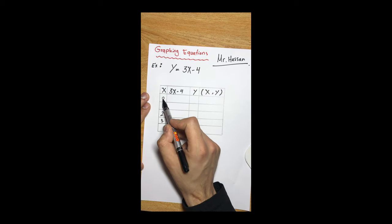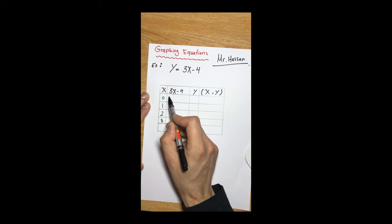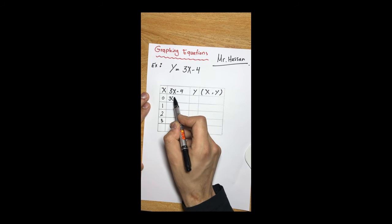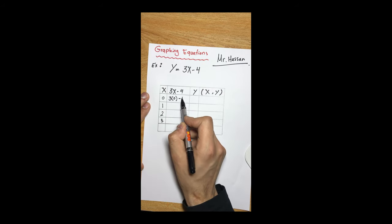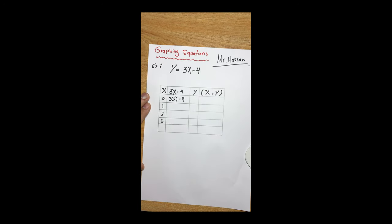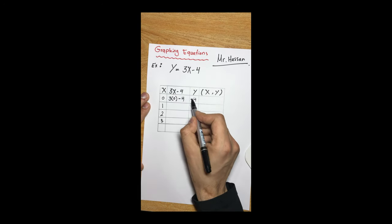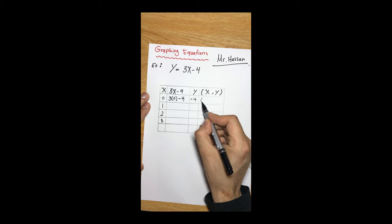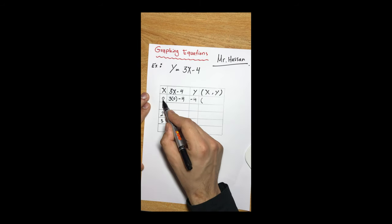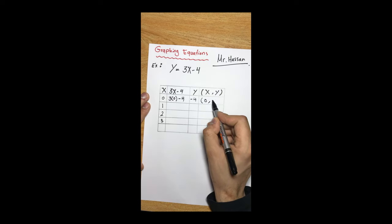Let's start with the first one. When x is equal to zero: 3 times 0 minus 4 — three times zero is zero, and zero minus four gives us negative four. So when x is equal to zero, the value of y is negative four. This is our first ordered pair.